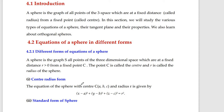In the center and radius form, if the center is known — say (a, b, c) — and the radius is r, then the equation of the sphere is given by: (x − a)² + (y − b)² + (z − c)² = r².